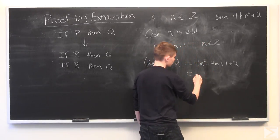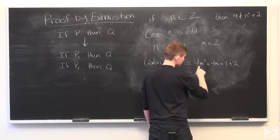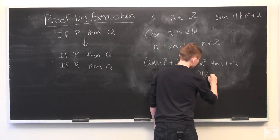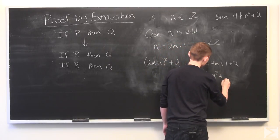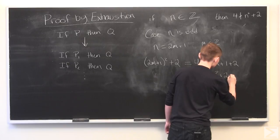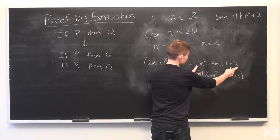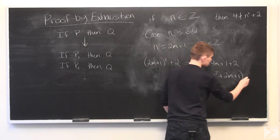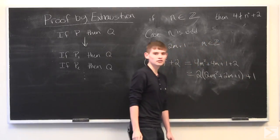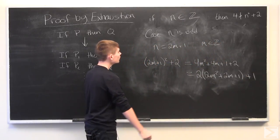And we can simplify this a little bit and get 2M squared plus 2M plus 1, all multiplied by 2. So I just factored 2 out of these three terms and added 1 at the end.